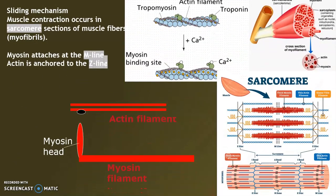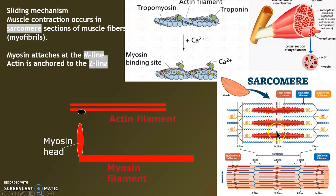This sliding mechanism occurs in a unit called the sarcomere. We have the actin — thick filaments — attached to the M line. And here is the actin attached to the Z line. When we look at muscles under the microscope, their striped appearance is because of these lines.